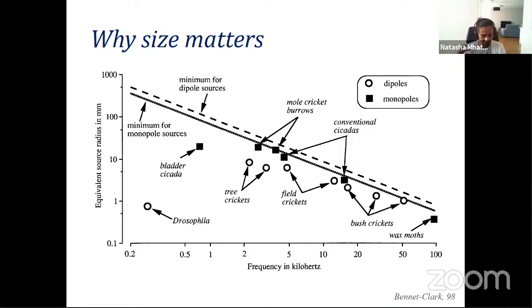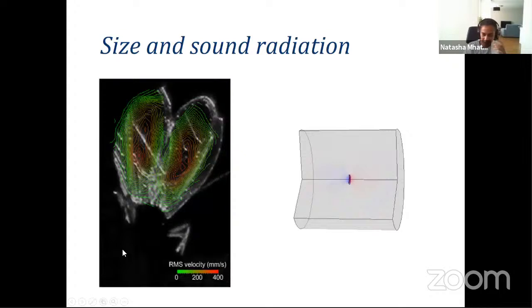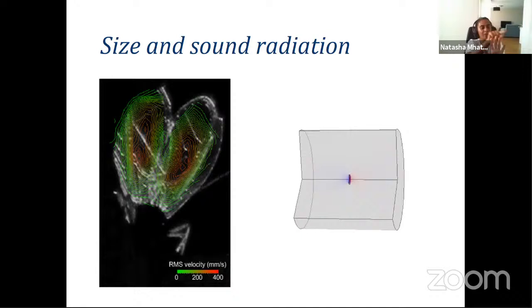Being big is very important when producing sound. At any of the frequencies these animals use, you really want to be larger than a certain threshold, and almost all insects we know of simply aren't that large. So what's special about that size threshold? When a wing vibrates back and forth, it pushes the air in front and rarefies the air behind. The problem is the wing is only so big — what happens at the edges?